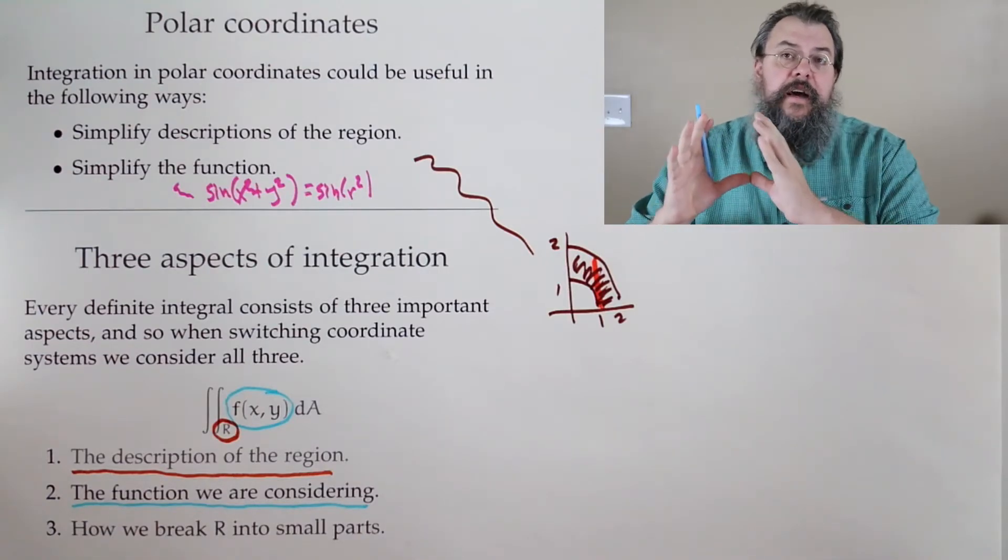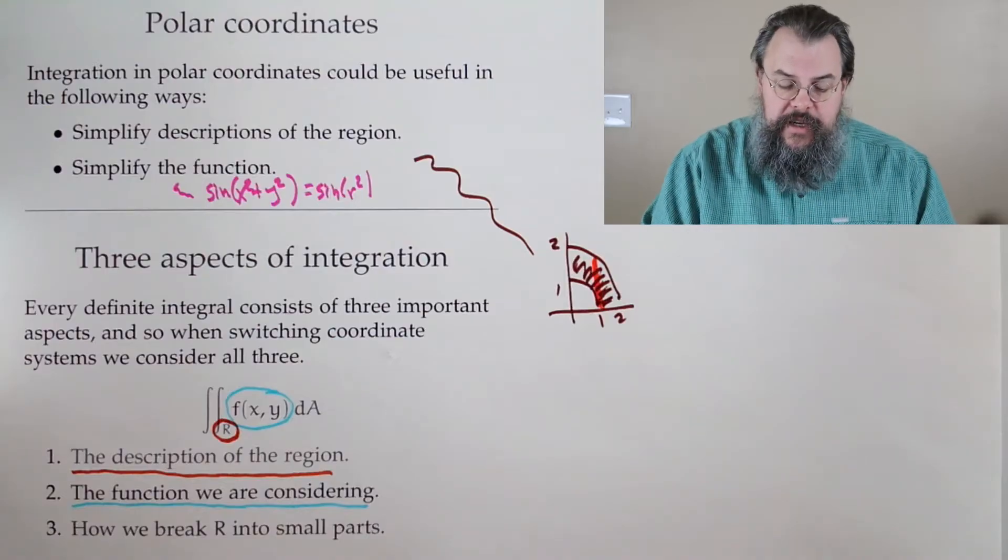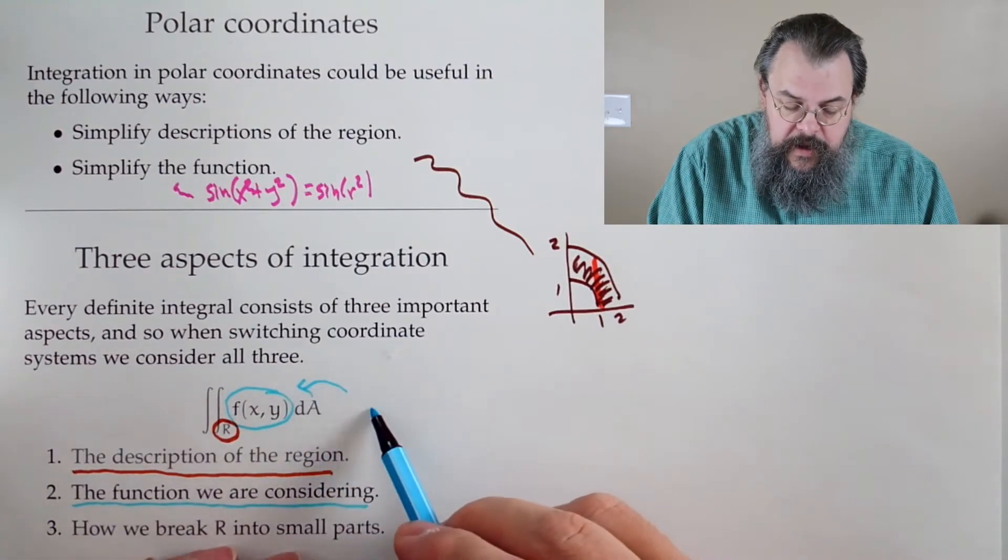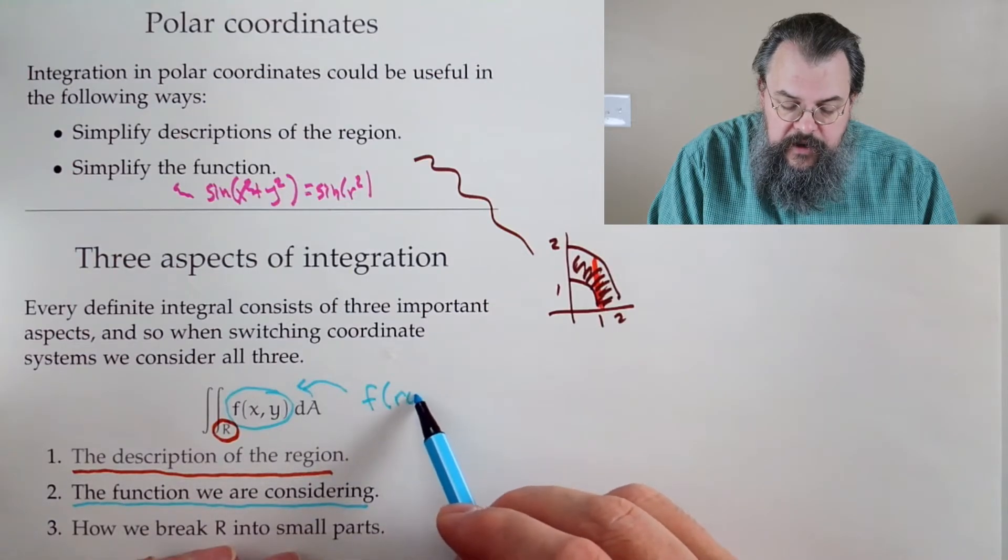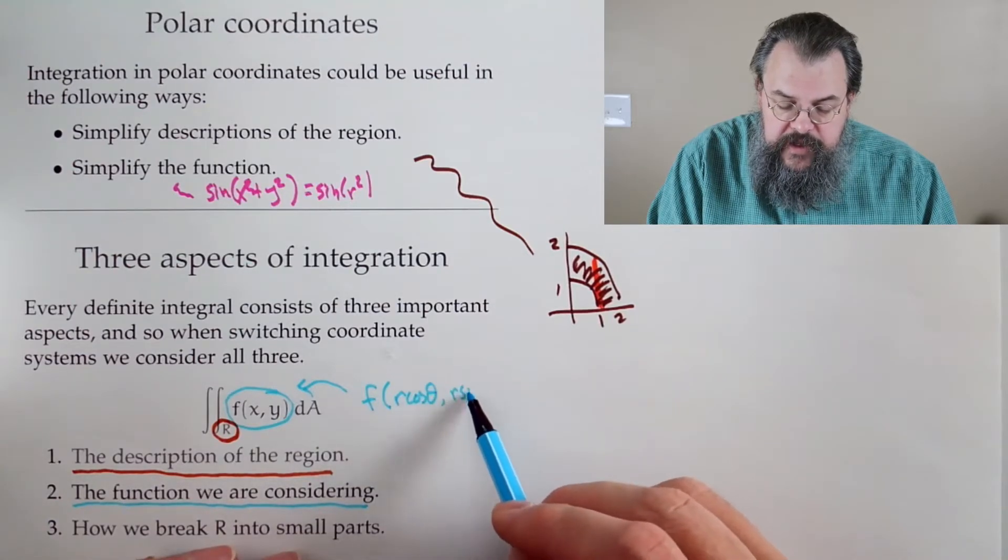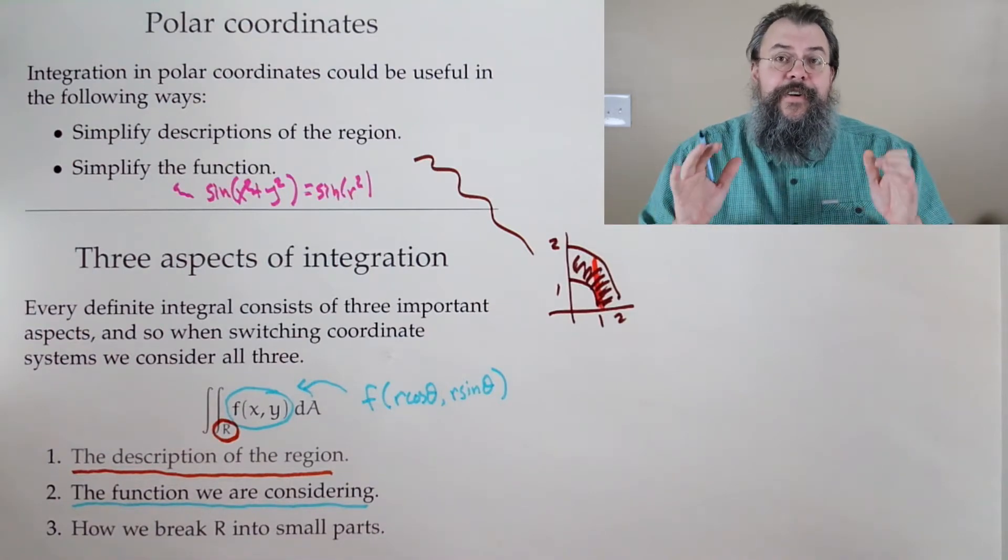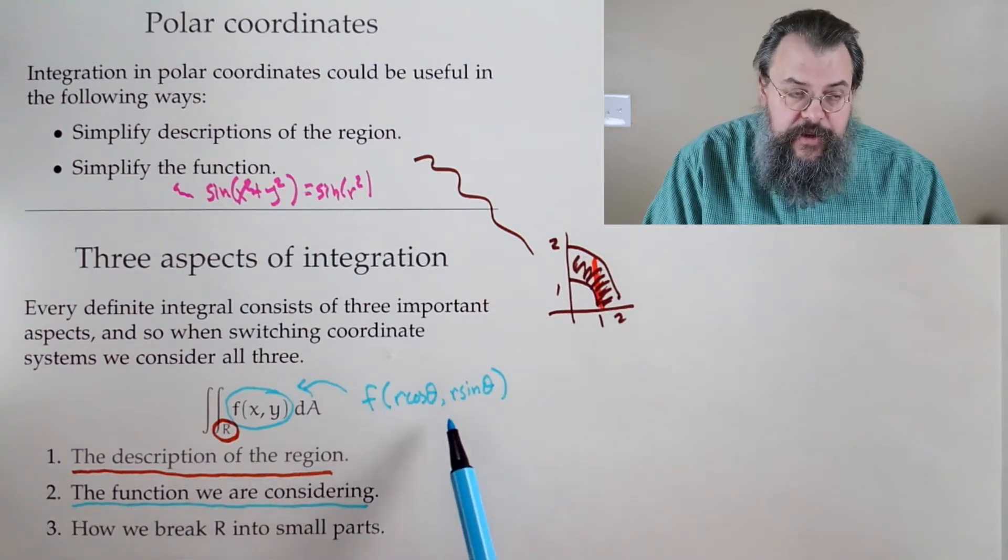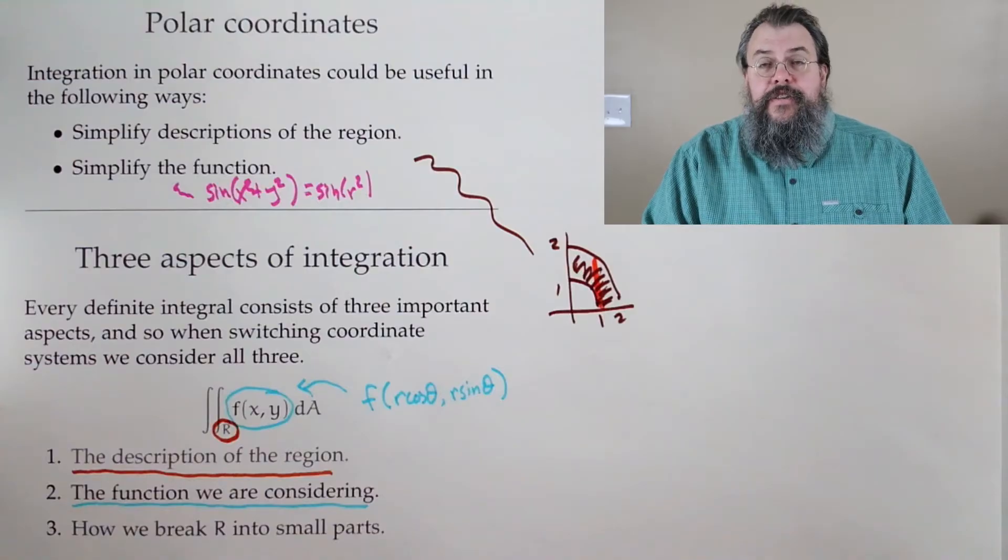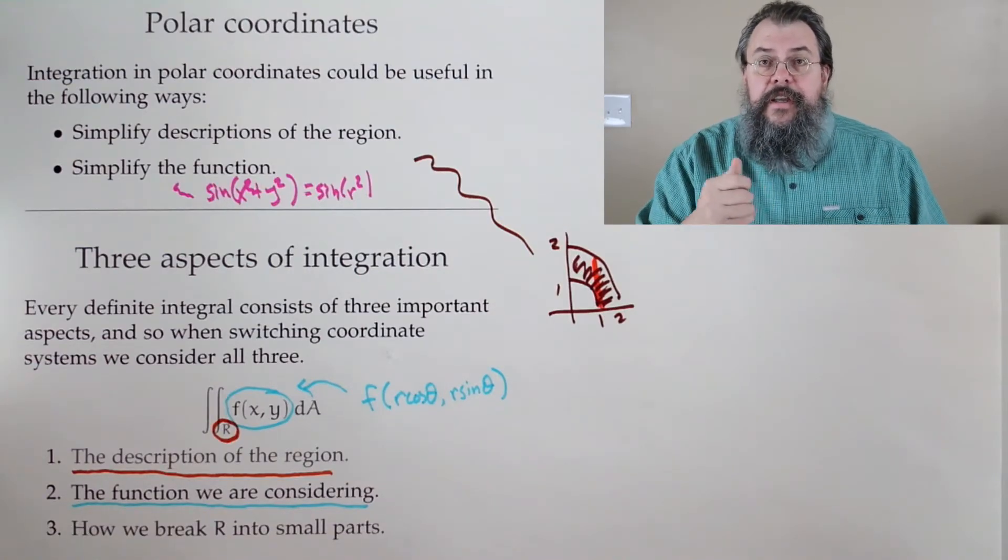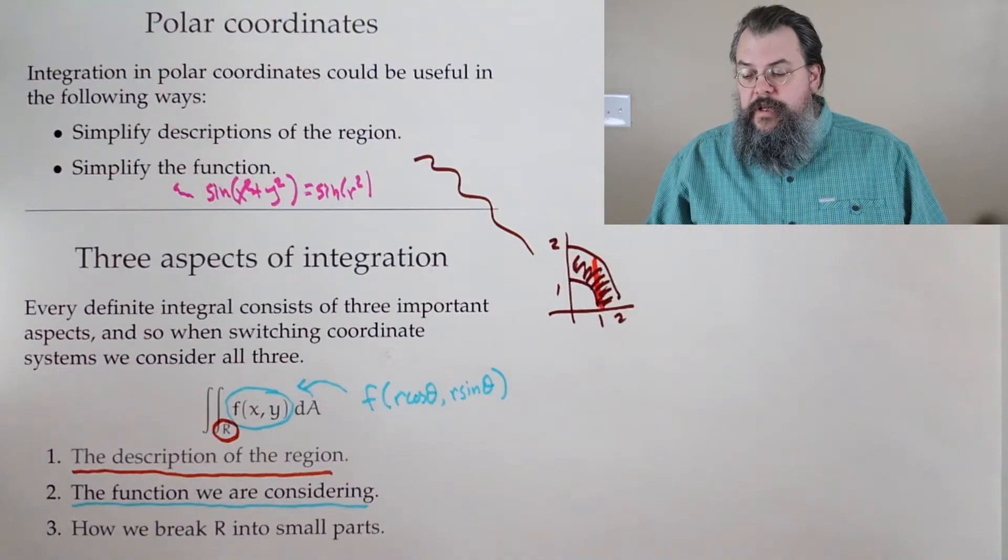How? Well, simply do the following. F of r cosine theta, r sine theta, and done. That's our function now expressed in terms of r and theta. So changing the coordinate system for the function, that's usually pretty straightforward. All right.